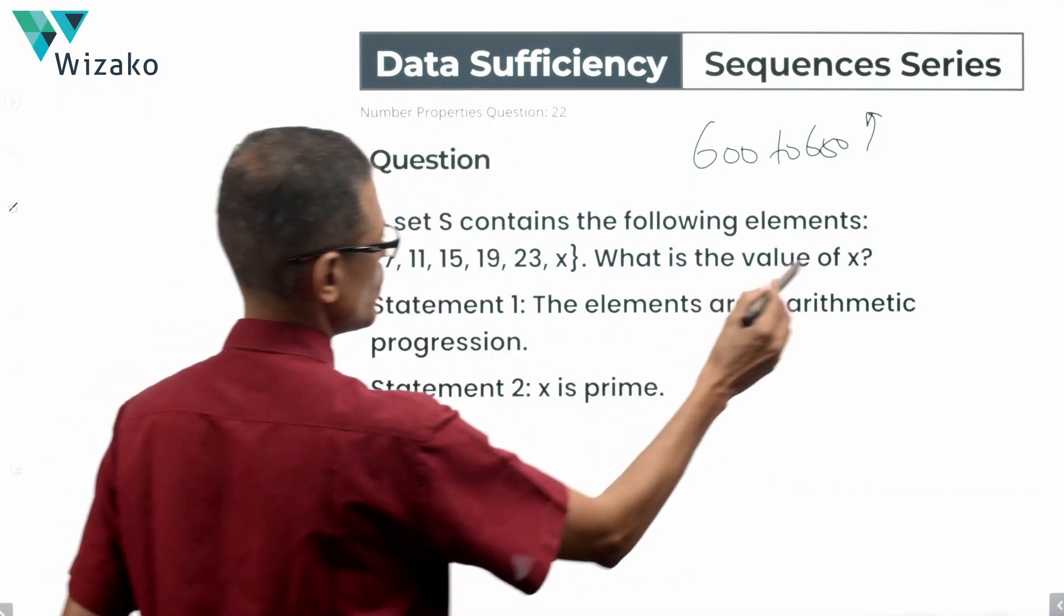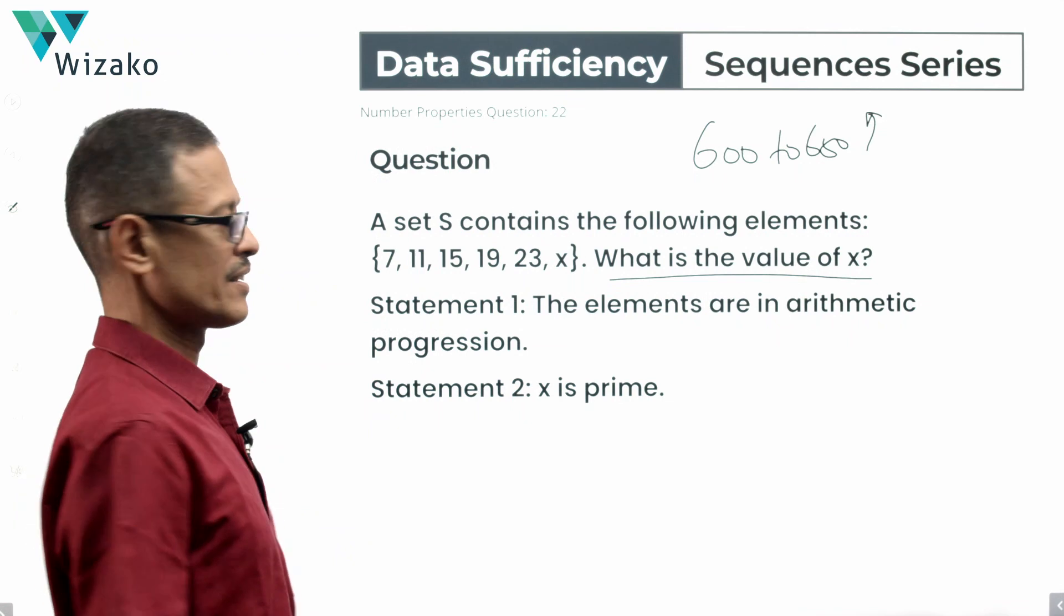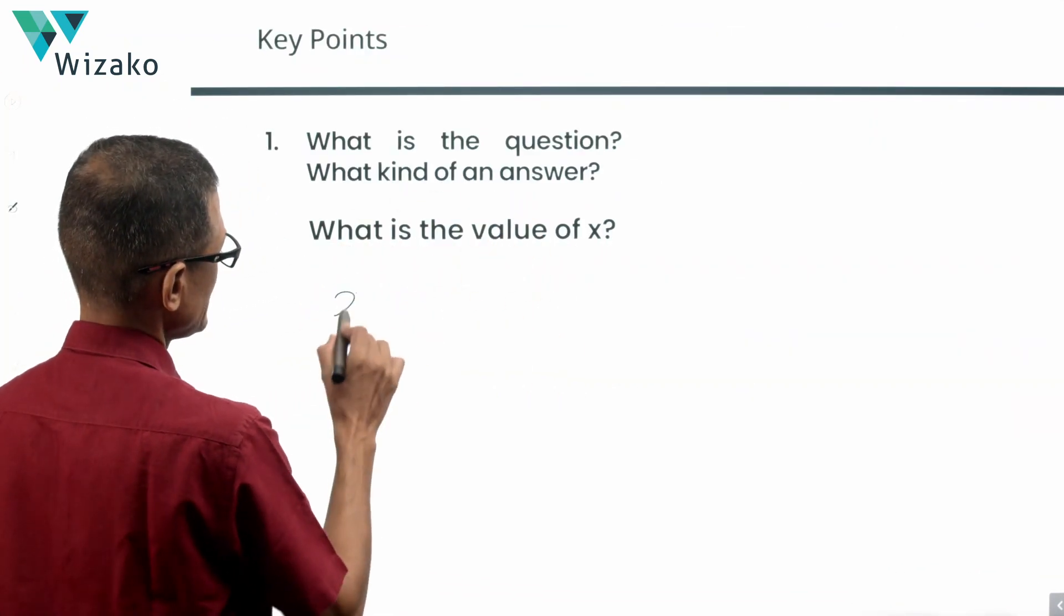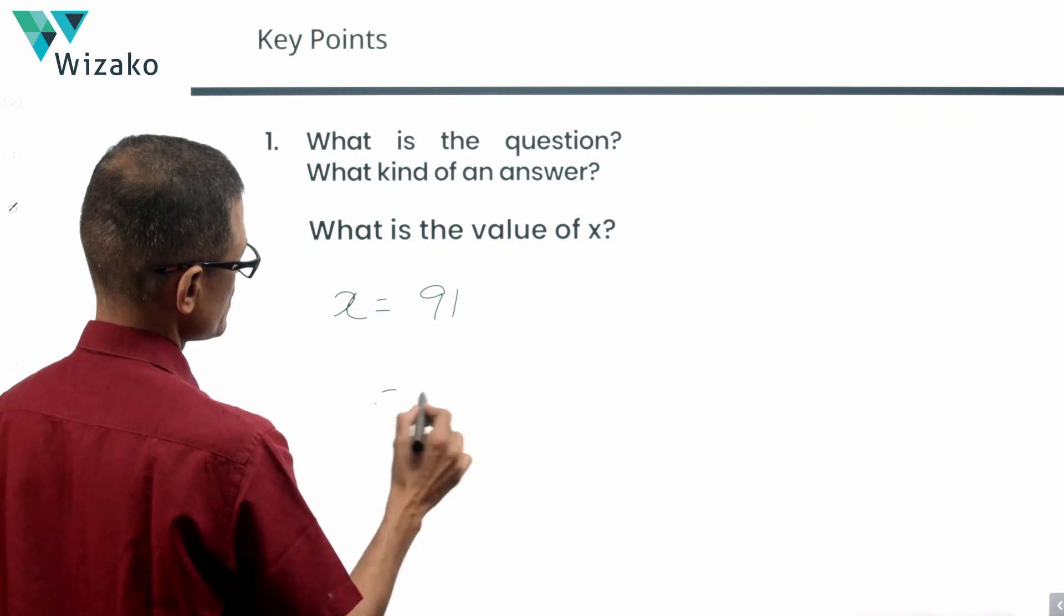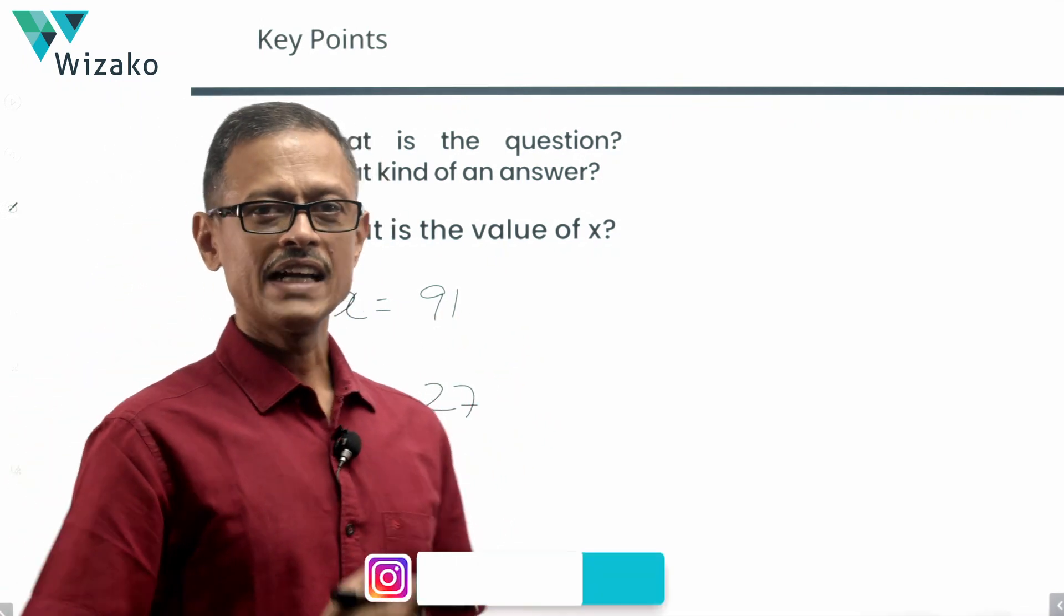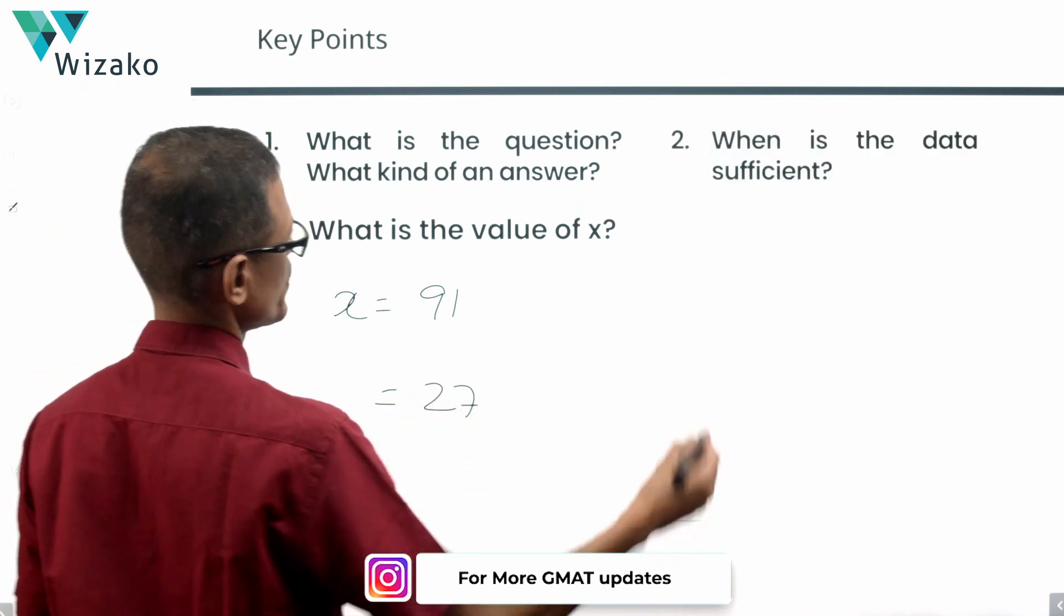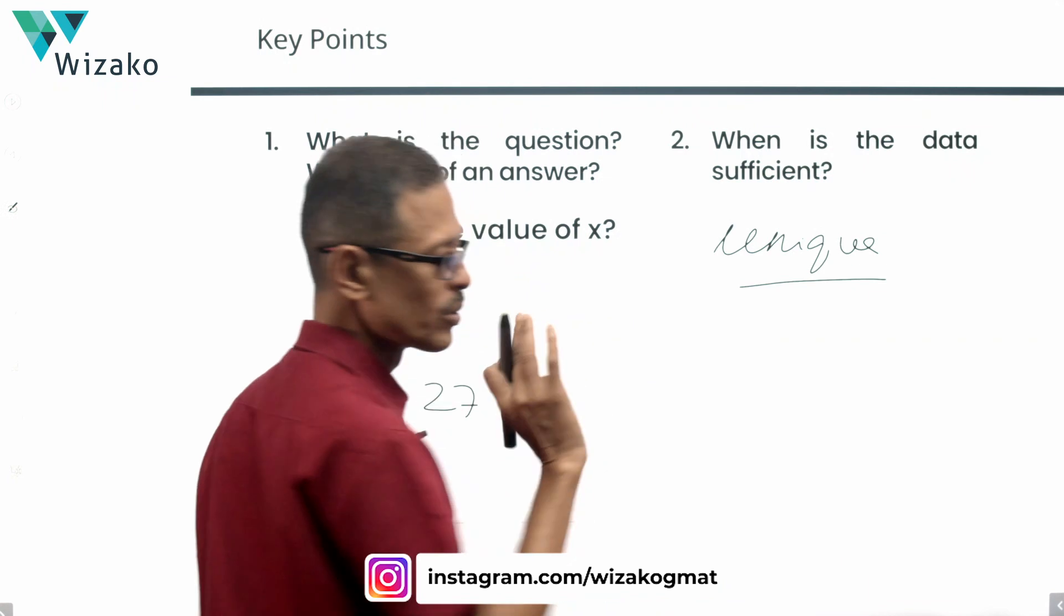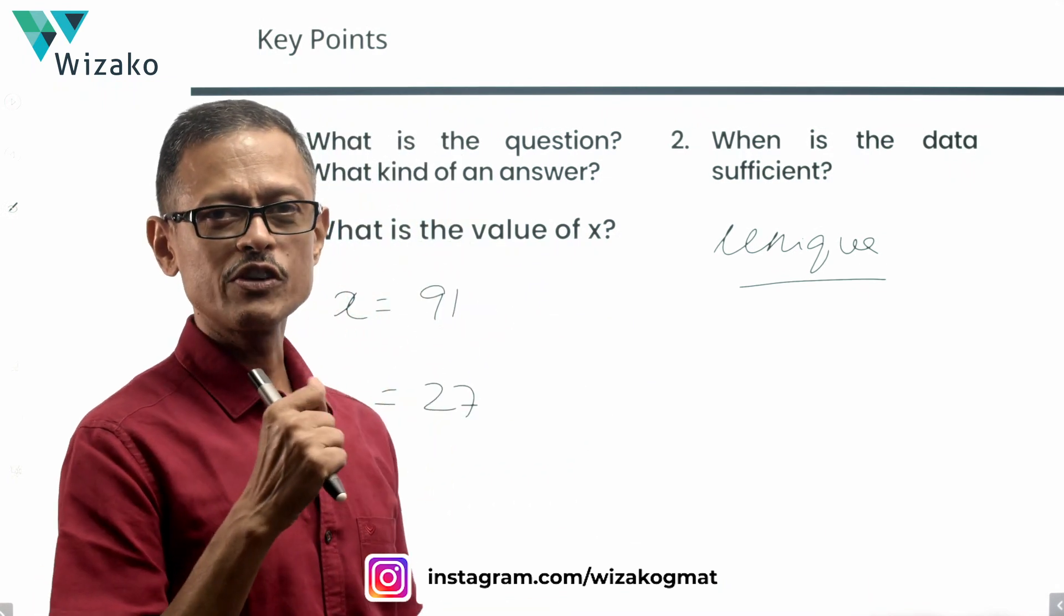Let's look at what we have to find out. What is the value of x is what the question is, right? Quickly look at the question. What is the value of x? So the answer should be x is equal to 91, x is equal to 27. We need to come up with a number as the answer. The answer to the question is a number. The data is sufficient when we have a unique value. Ground rules established. We also know what we should be watchful of.